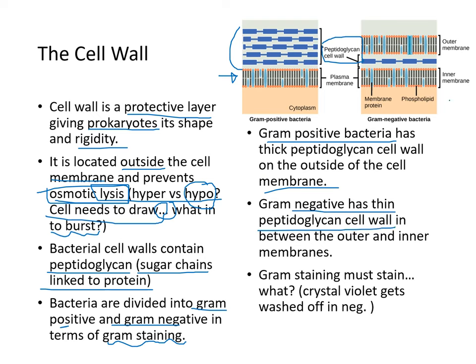Gram-negative bacteria have a thin peptidoglycan cell wall sandwiched between outer and inner membranes. Gram staining stains the peptidoglycan cell wall, but in gram-negative bacteria the crystal violet stain just gets washed off.